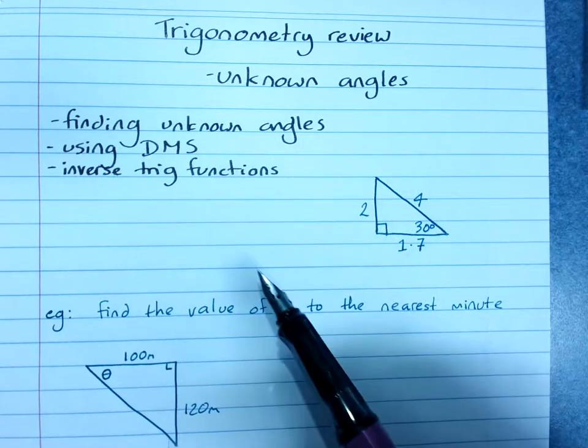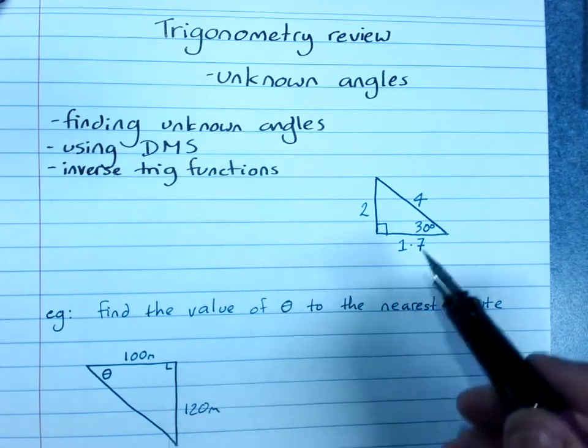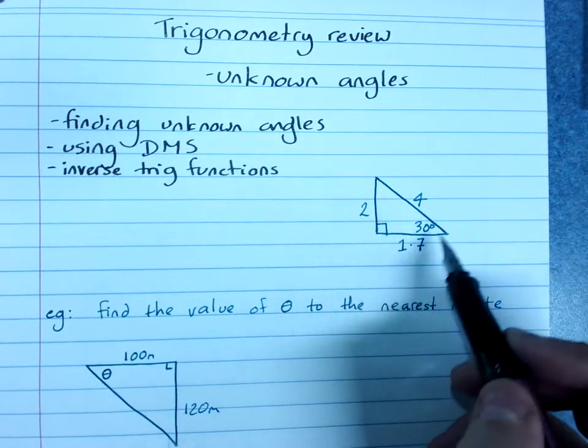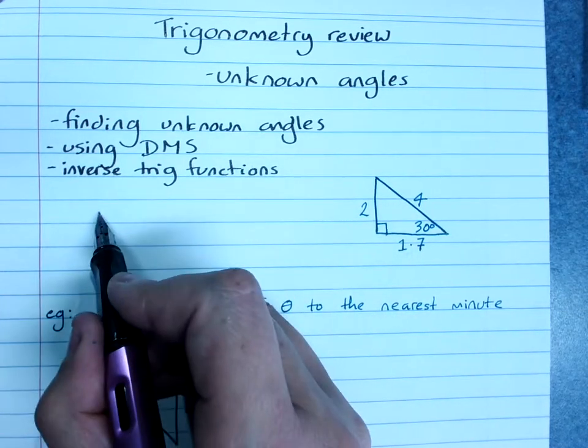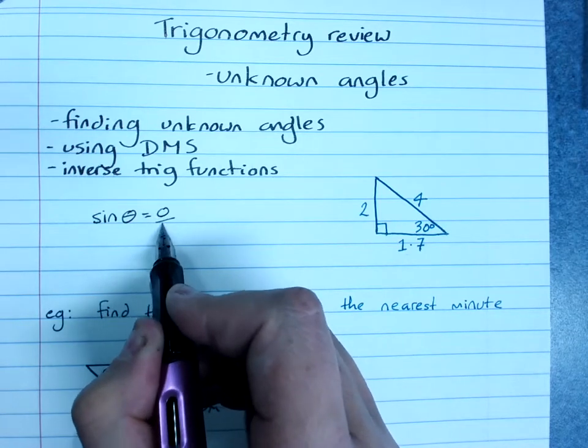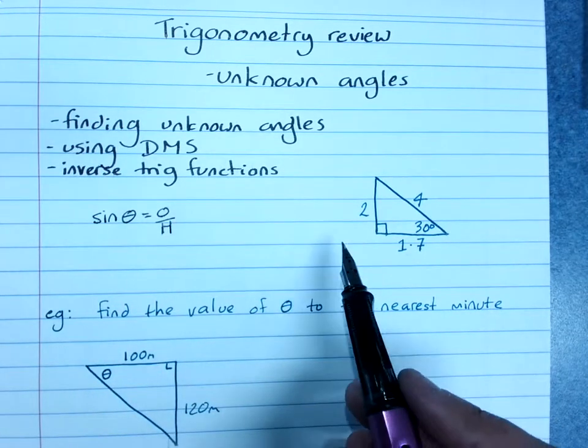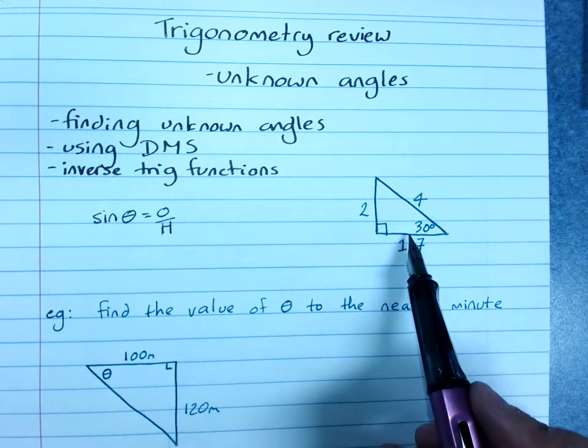I don't need you to write down this next bit. I just want to look at why we use inverse sine, cosine, tan when we're finding an unknown angle. I've just drawn a triangle and I'm just going to focus on the sine ratio. Sine of the angle is opposite over hypotenuse. Now what this is saying is that for any right angle triangle with a 30 degree angle...